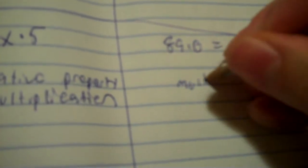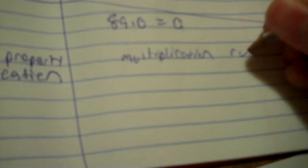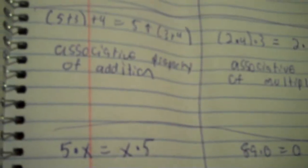The last property: eighty-nine times zero equals zero. Whenever you take any number times zero, the product goes to zero. That is the multiplication rule of zero. So those are your eight properties — hope you took good notes. There will be six of them on the back with just different numbers.